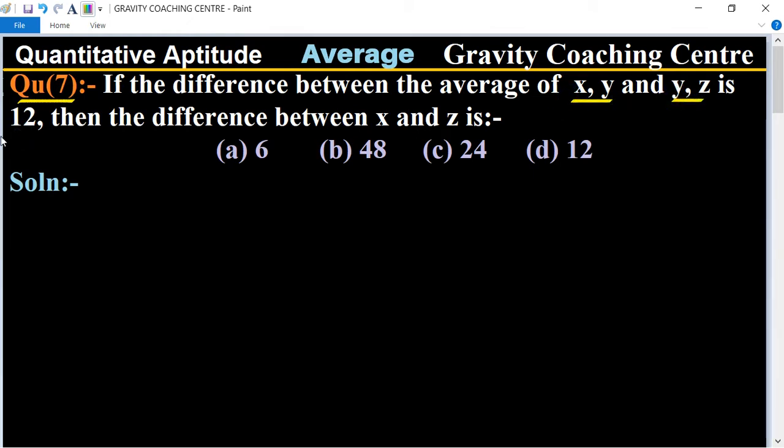So this one is very simple. First we find the average of x, y. So average of x, y is x plus y upon 2.